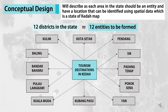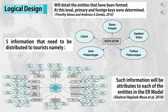Conceptual design describes each area in the state as an entity that has a location which can be identified using spatial data — specifically a map of Kedah state. There are 12 districts in Kedah, so we need 12 entities to be formed. The diagram shows how those 12 entities are transferred into graphic form.